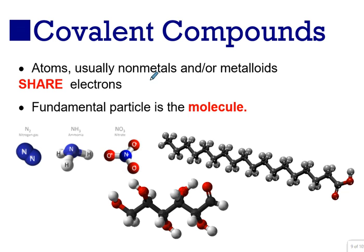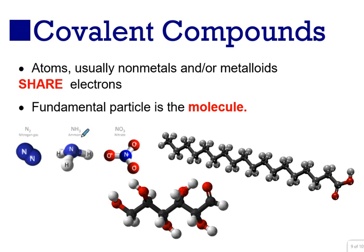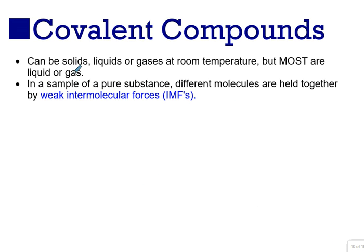Covalent compounds are different — they're formed from sharing electrons in bonds. The fundamental particle is called the molecule. Examples include sugar (a solid), a fatty acid (a liquid), and gases. So covalent compounds can be solid, liquid, or gas at room temperature. Most are liquids and gases, but there are many that are solids.